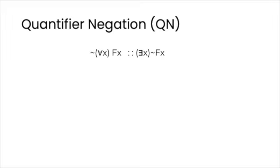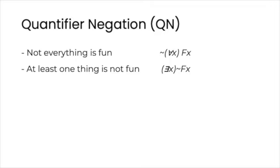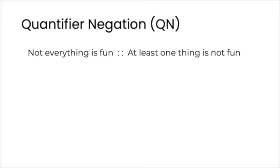This rule is written with four dots because it is an equivalence rule — you can go from right to left and from left to right. And if you look at it, it makes sense. Consider the pair of English sentences: 'not everything is fun' and 'at least one thing is not fun.' It is clear that these are true in exactly the same circumstances, and so are equivalent.